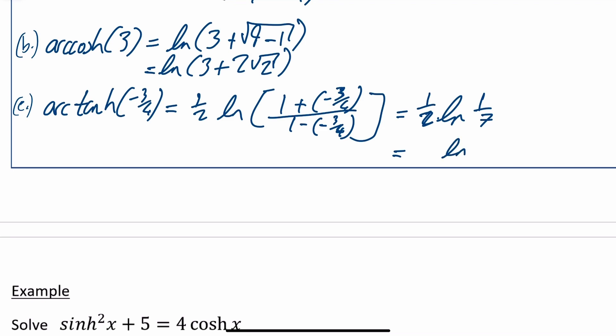Writing 1/7 as 7 to the power of minus 1 inside the ln, we have a half times ln of 7 to the minus 1. The minus comes out to the front, giving minus a half ln of 7. That demonstrates beautifully why we shouldn't skip steps when working out, to ensure we go through the process correctly.